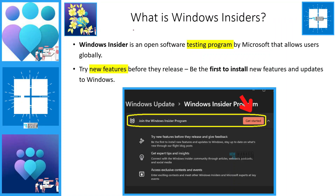Let's understand what Windows Insider is. Windows Insider is an open software testing program run by Microsoft that allows users globally to get enrolled from their Windows devices. If you are running old hardware, you probably won't be able to join — your device needs to meet specific hardware requirements to join the Windows Insider program, which align with Windows 11 hardware requirements.